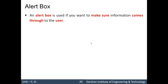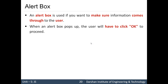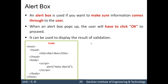We'll start with the alert box. The alert box is used when you want to make sure information comes through to the user. The user has to click the OK button to proceed — they can only access the page after they click OK and read the message. This can be used to display the result of validation or anywhere you want to ensure the information is read by the user.